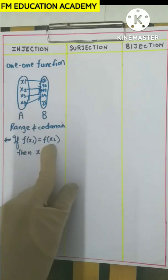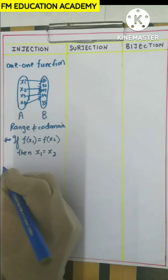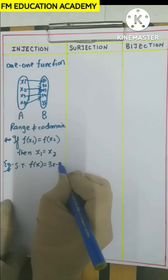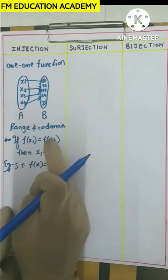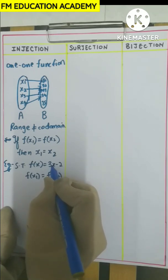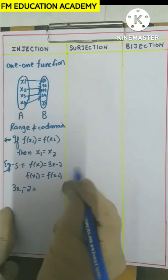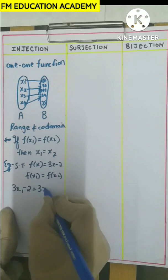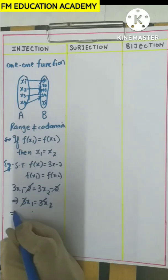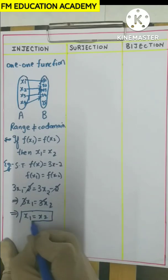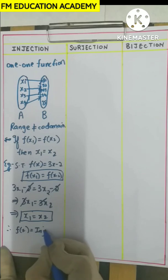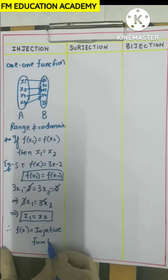For example, show that f(x) = 3x − 2 is an injection. What we do is set f(x1) = f(x2). So 3x1 − 2 = 3x2 − 2. The minus 2 on both sides cancels, giving 3x1 = 3x2. Then 3 cancels, giving x1 = x2. Since f(x1) = f(x2) implies x1 = x2, we can say f(x) = 3x − 2 is an injective function.